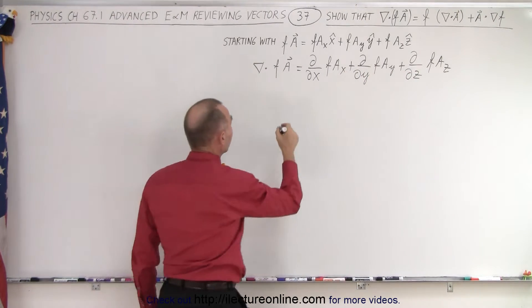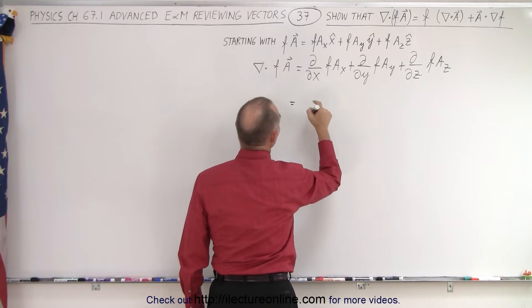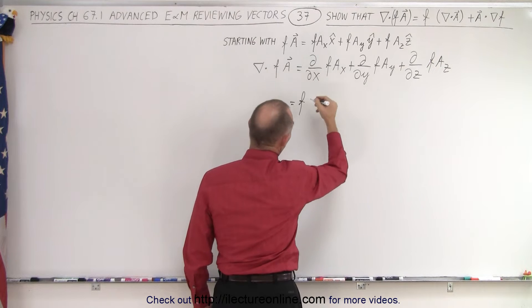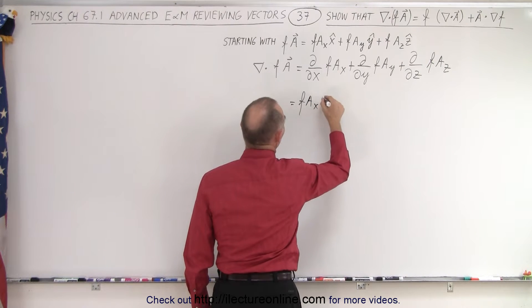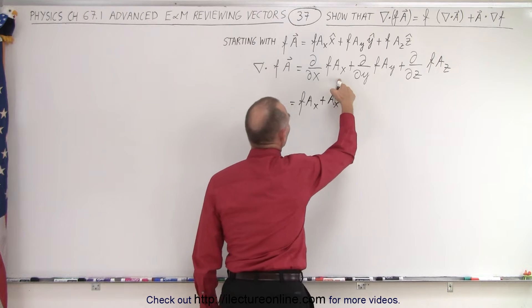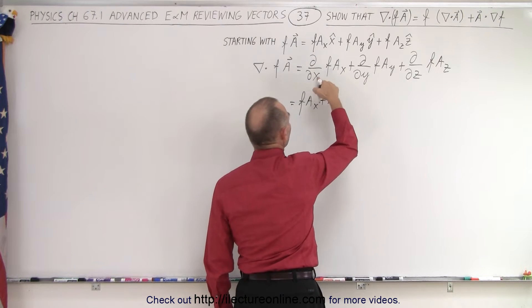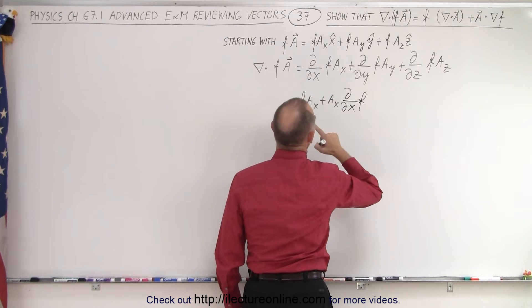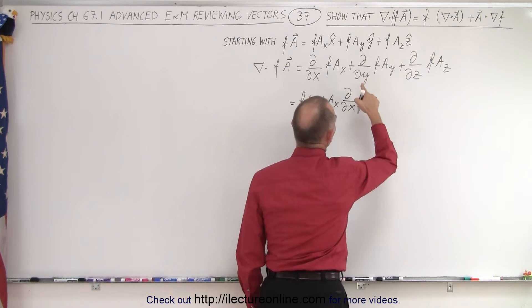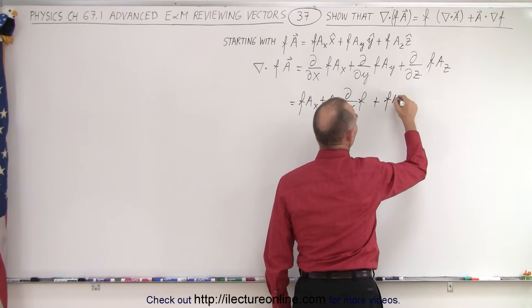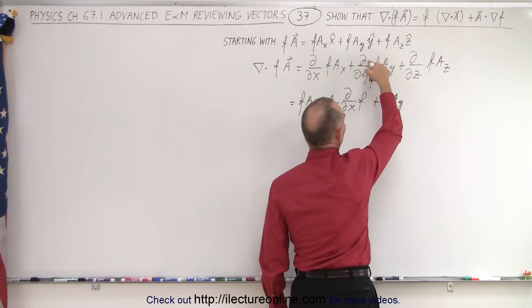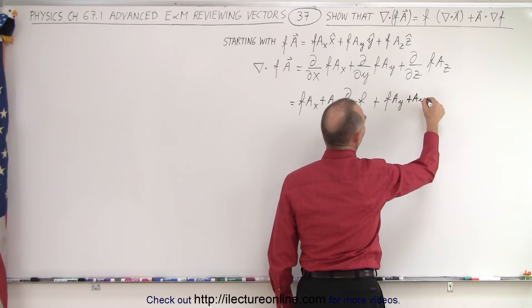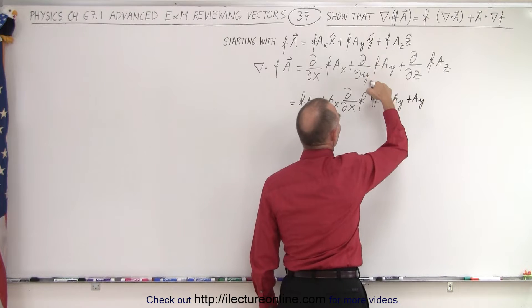We need to use the product rule. This is going to be equal to f times the partial derivative with respect to x of A sub x, plus A sub x times the partial derivative with respect to x of f. Then we do it again: plus f times the partial derivative with respect to y of A sub y, plus A sub y times the partial derivative with respect to y of f.